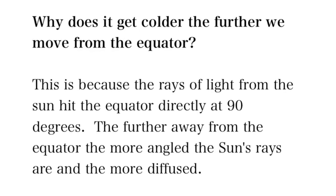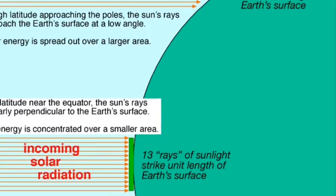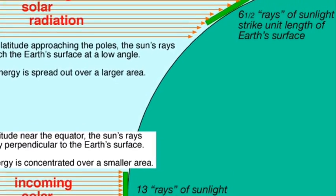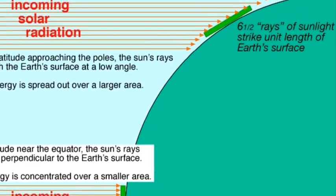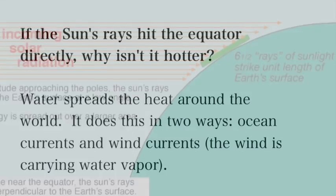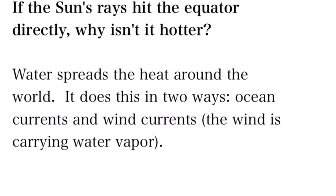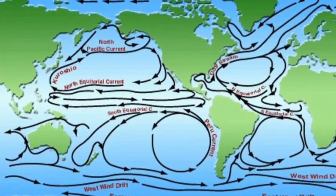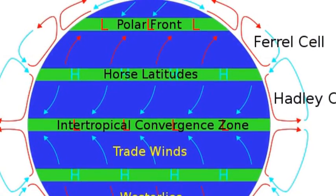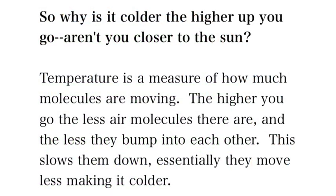If you noticed on that map, it was red in the middle and got colder as you went away. Why is that? All the sun is hitting straight on at the equator, but up top it's hitting at an angle, and a lot of it's barely hitting. That means less sunlight is absorbed and less heat. So if all the sun's hitting directly at the equator, why isn't it just crazy hot? Because we've got water to move it around the planet. The water takes the energy from the equator and spreads it around — both in ocean currents and wind currents.